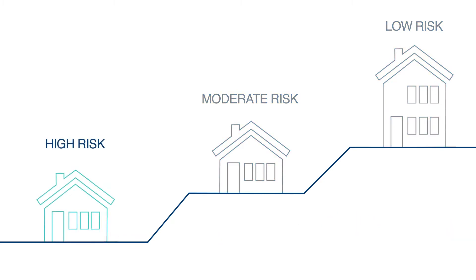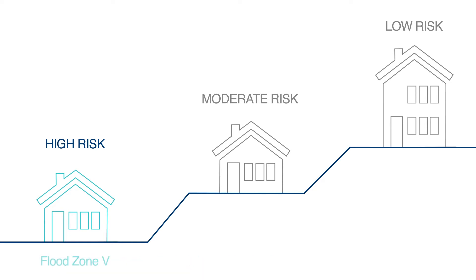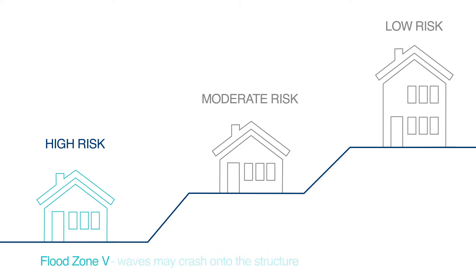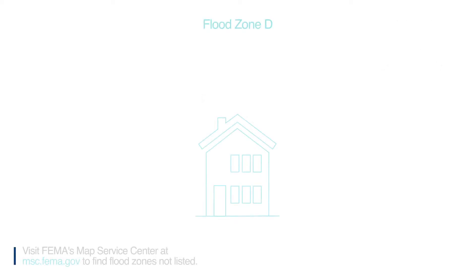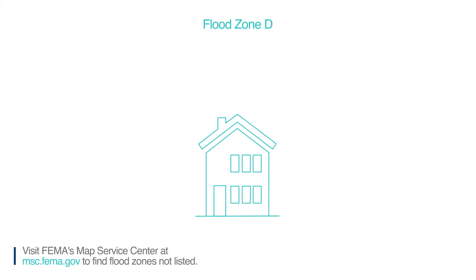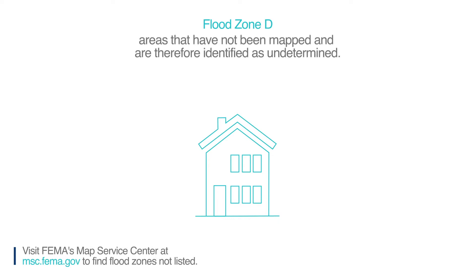Or the structure could be at a higher risk of flooding in flood zones that start with the letter A, which represents accumulation of surface waters, or V, which stands for velocity and covers properties by a large body of water where the waves may crash onto the structure. Flood zones that start with the letter D are in areas that have not been mapped and are therefore identified as undetermined.